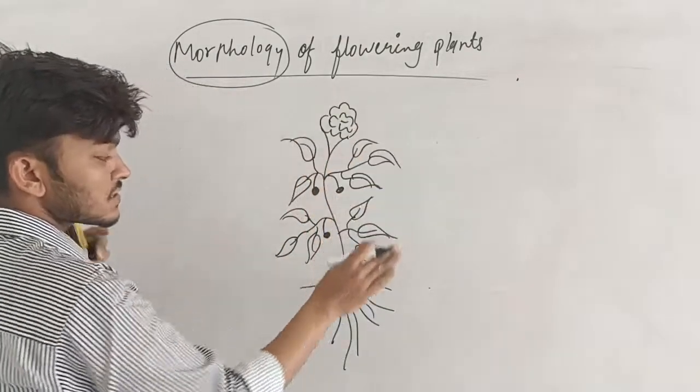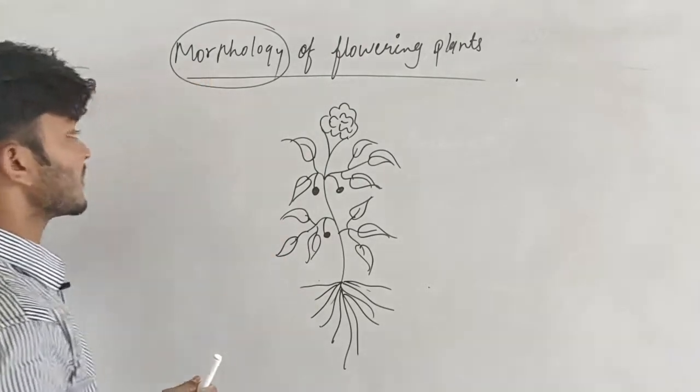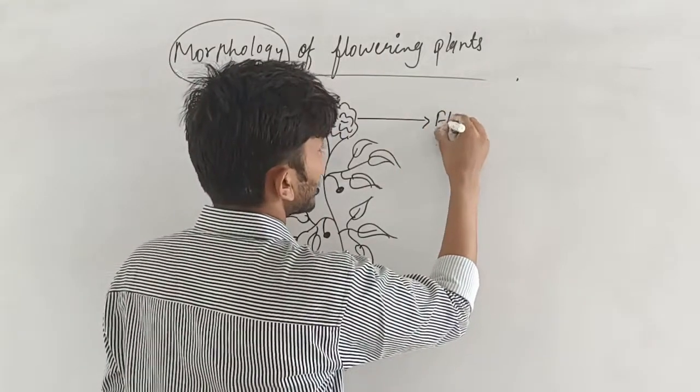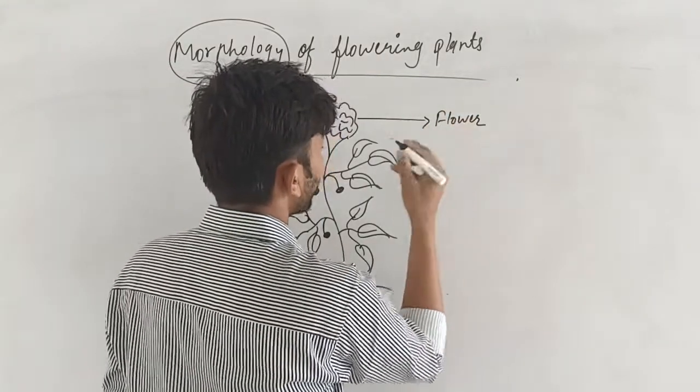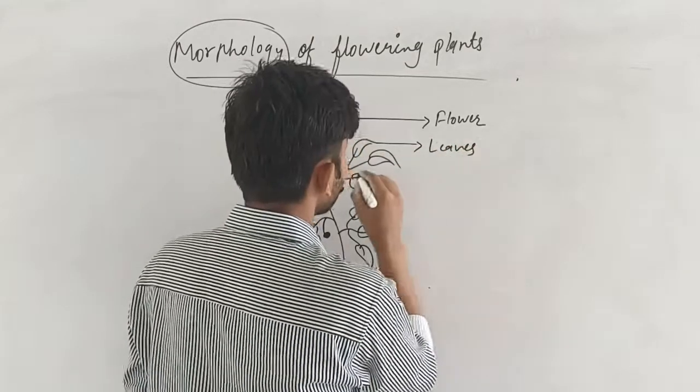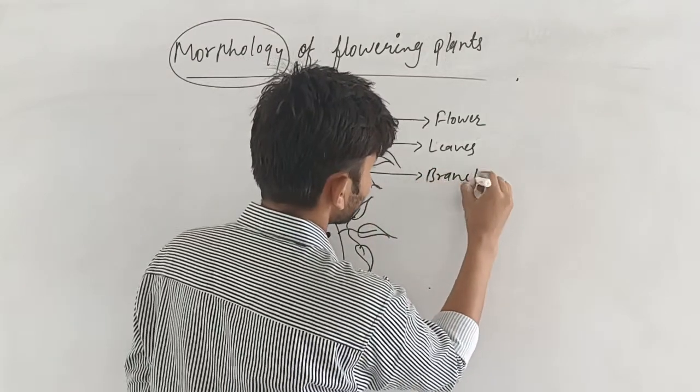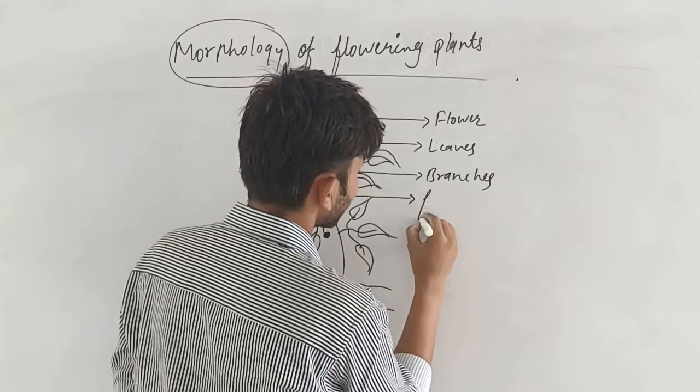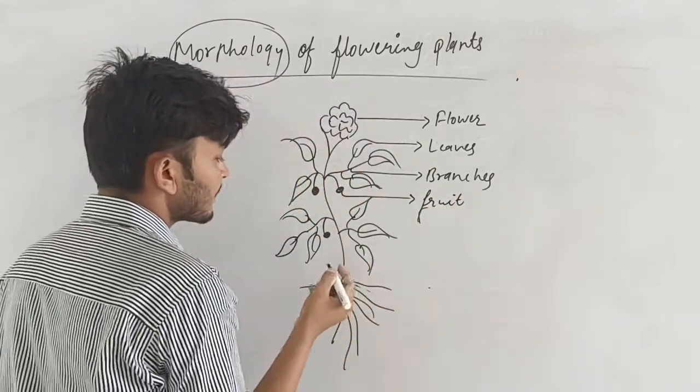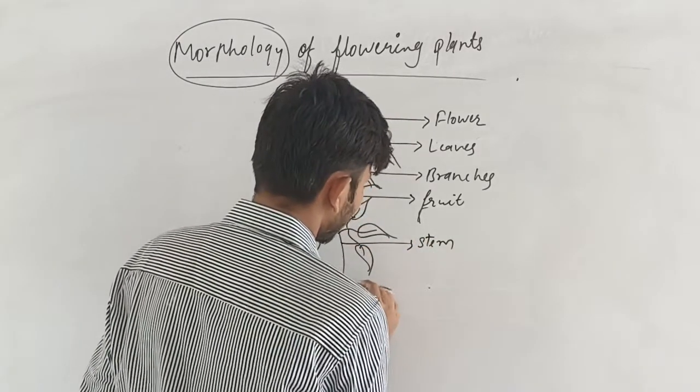If you want to study all the parts of the plant, that is known as morphology. Suppose this is flower. These are leaves, these are branches, this is fruit, this is stem, these are roots.